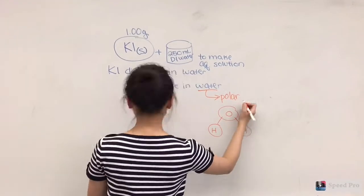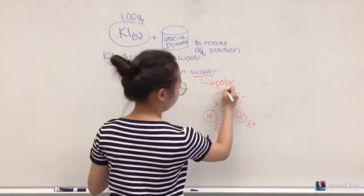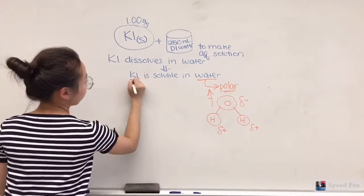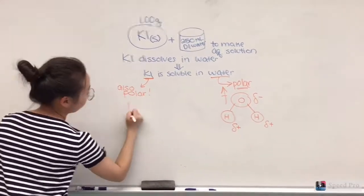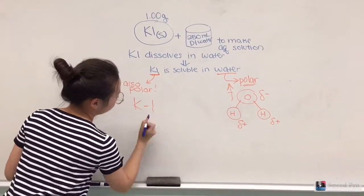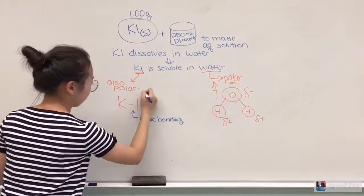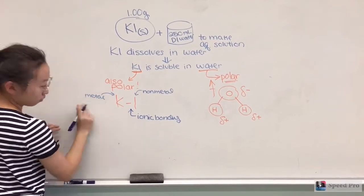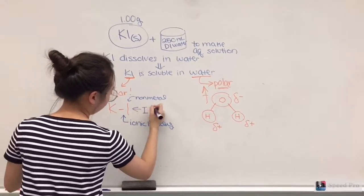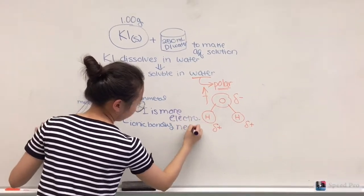When a molecule is polar, it means that there's a greater electron density around one molecule than the others. This means the part with greater electron density will be negatively charged. The atom that has greater electron density is the more electronegative atom, which is the oxygen in the case of water.